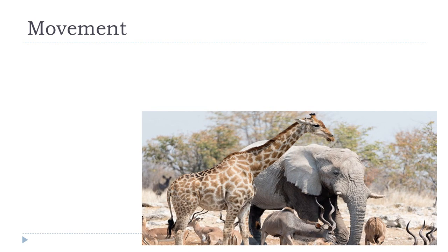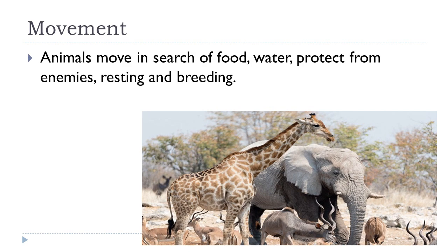All animals move to search for food, to protect themselves from their enemies, and to find and build resting and breeding places. Animals show different types of movement — they can run, crawl, swim, and climb. The limbs of animals are modified according to the way they move.